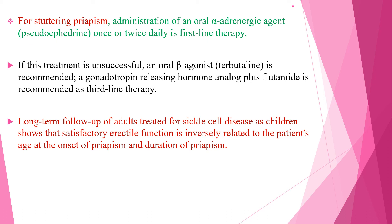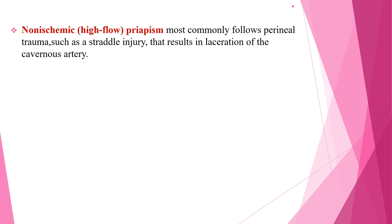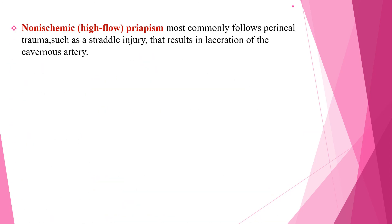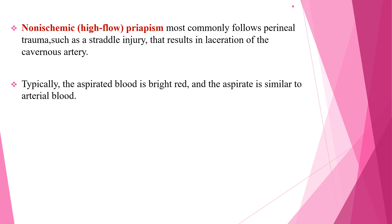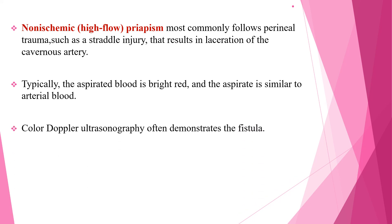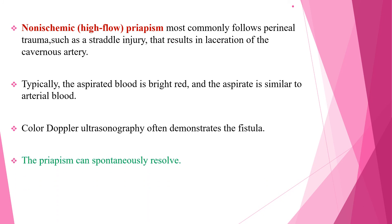Long-term follow-up of adults treated for sickle cell disease as children shows that satisfactory erectile function is inversely related to the patient's age at the onset of Priapism and the duration of Priapism. Non-ischemic or high-flow Priapism most commonly follows perineal trauma such as straddle injury resulting in laceration of the cavernous artery. The aspirated blood in this case is typically bright red, resembling arterial blood, and color Doppler ultrasonography often demonstrates the fistula. Priapism in this case most often resolves spontaneously; if not, angiographic embolization is indicated.